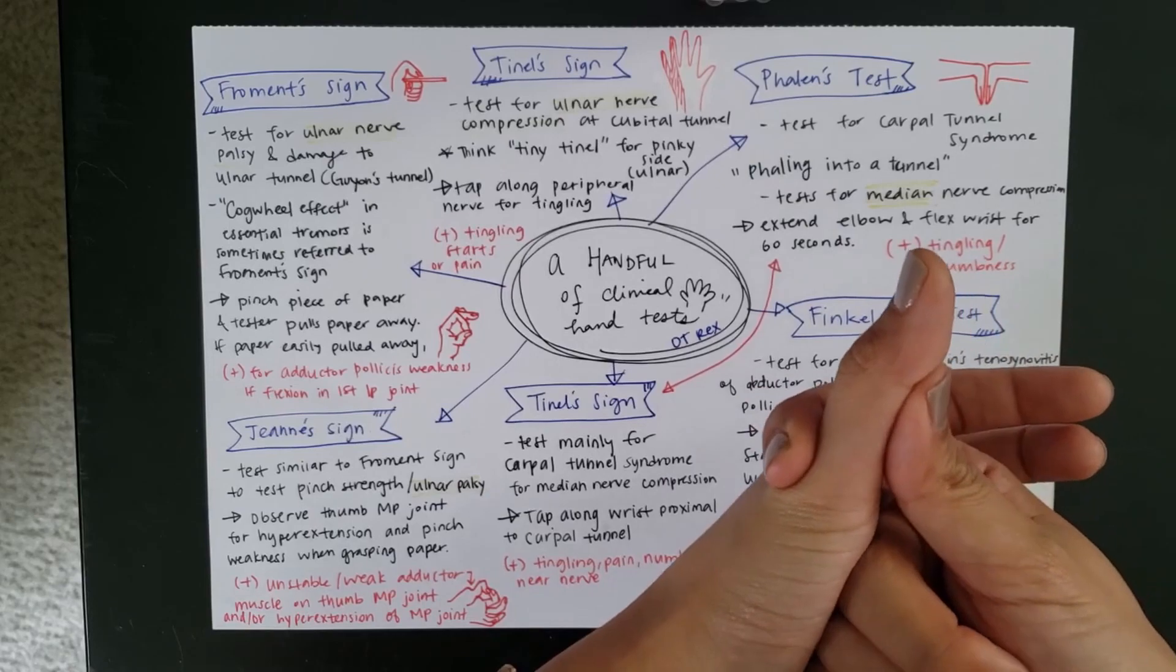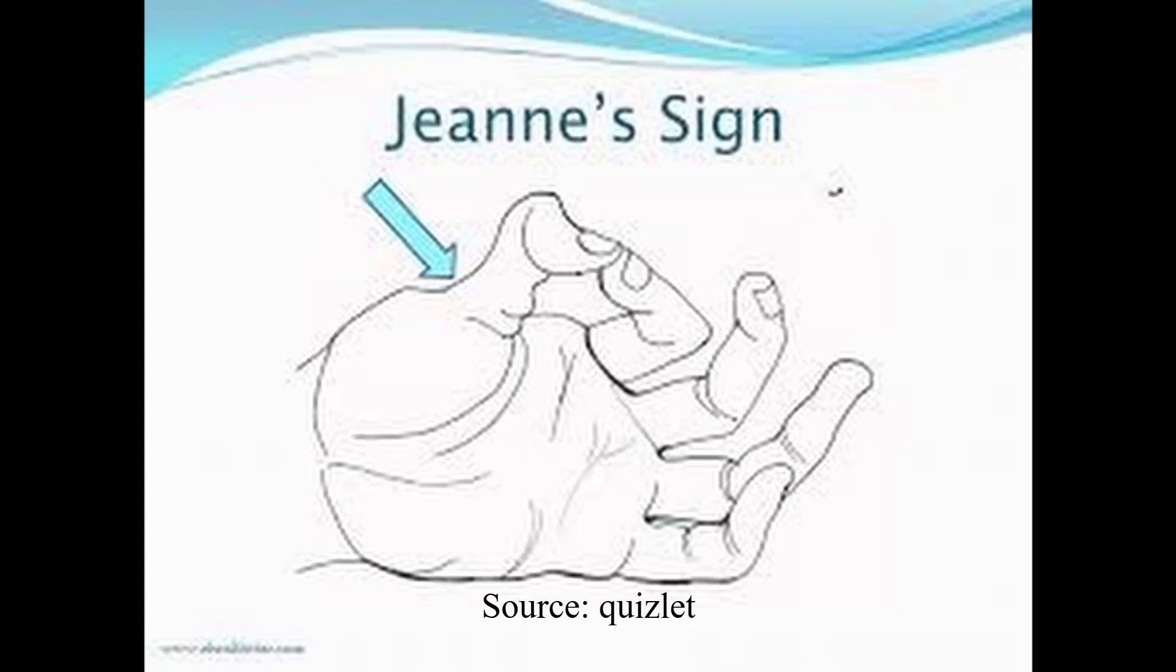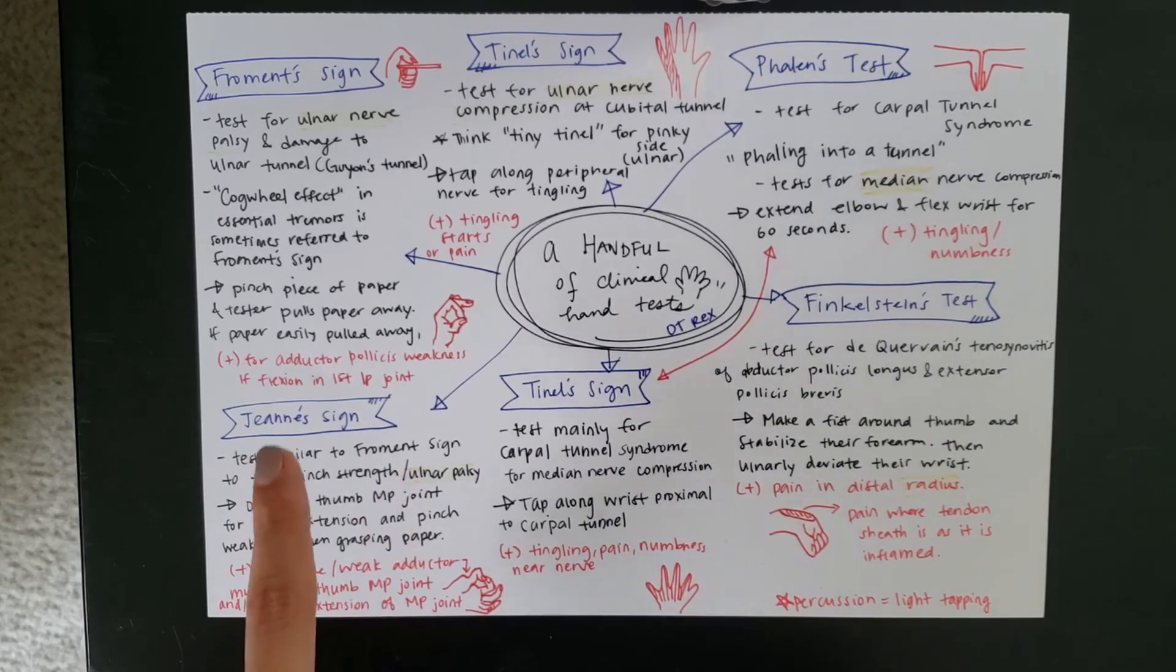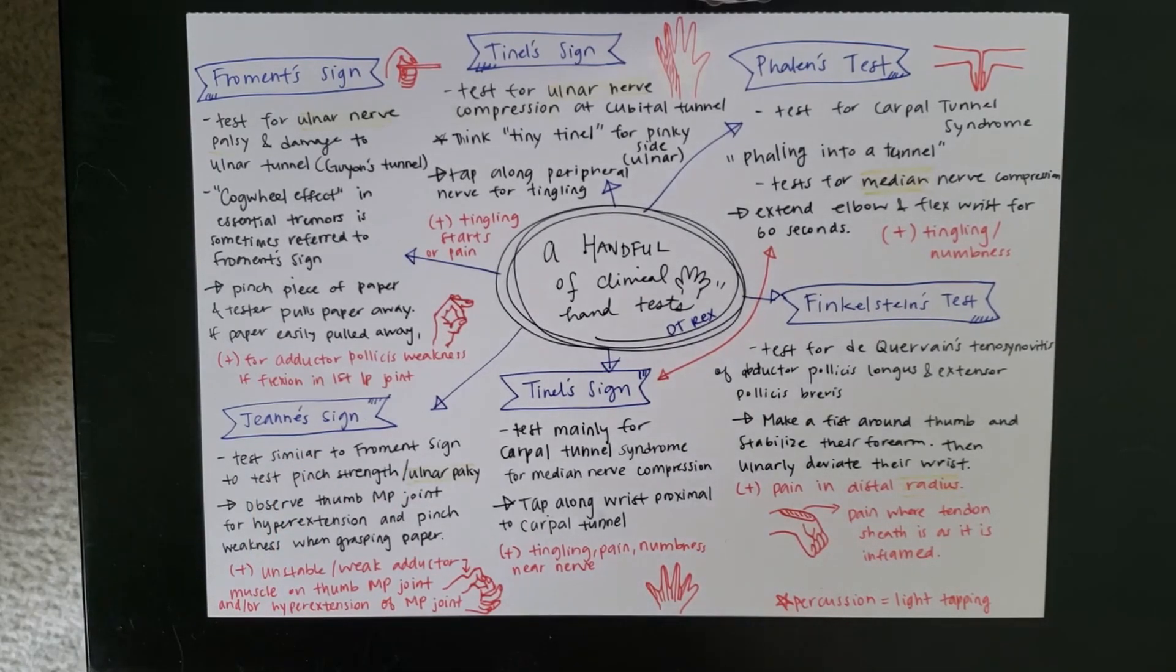But instead, we're really focusing on looking at the MP joint. So, this joint right here is going to sink in and hyperextend. And I'm going to link a picture of that one. And so, that means that you have an unstable or a weak adductor muscle there on the thumb of the MP joint. And that also can look like hyperextension, which I can't do because my finger is okay there. So, that's the main difference. So, this Jeanne's is looking at the MP joint for hyperextension. And the Froment's is looking at the flexion for the first IP joint.